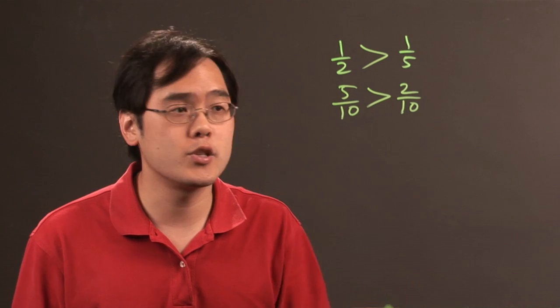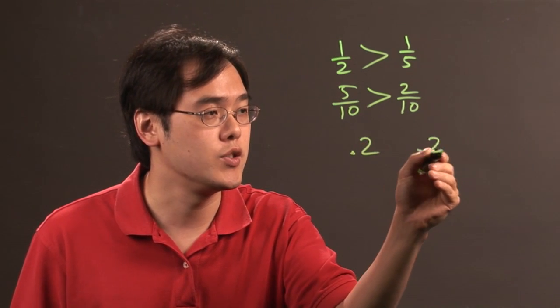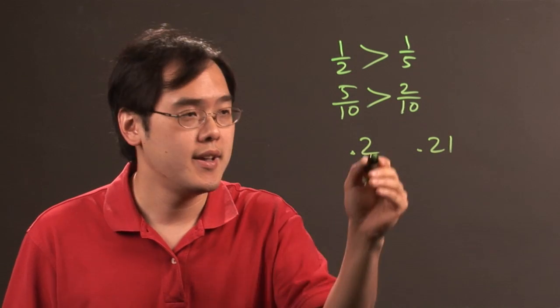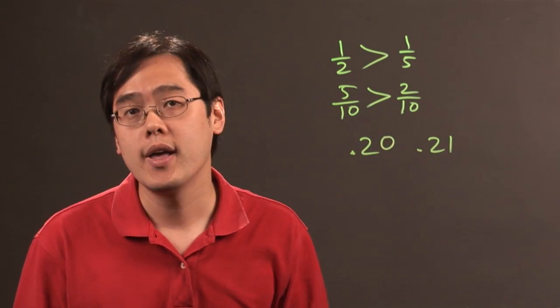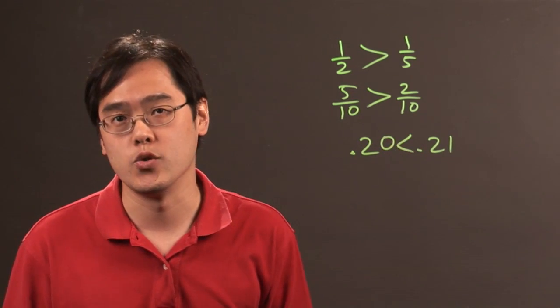Comparing decimals is a little more straightforward because if you have .2 and .21, for example, you can write them as the same decimal places, .20, and as you can tell, .20 is less than .21.